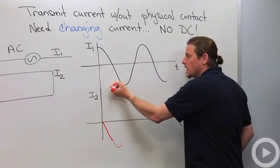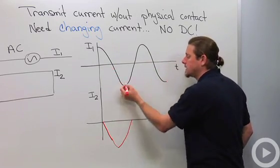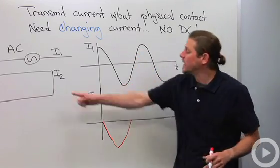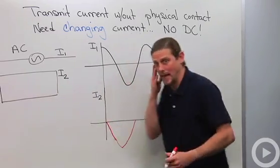And then keeps on decreasing, so this is still negative until here where it's going to start to increase. And so now this current generated in the secondary loop will be counterclockwise again, so positive.